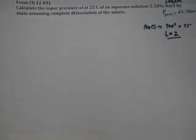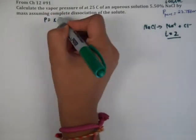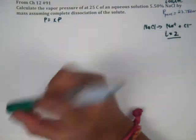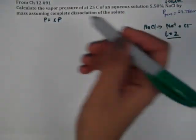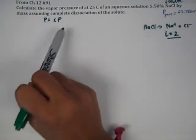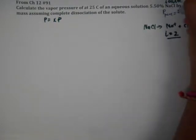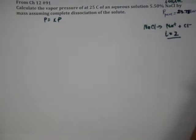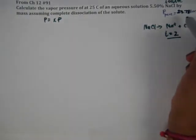So, remember our formula for vapor pressure is P equals XP, right? And the X or chi is mole fraction. Mole fraction times the pure of the solvent. And I didn't give it to you but it's in a table. Pure water is 23.78 torr. So, to find the final vapor pressure, we need to find the X because we know our P pure is going to be 23.78.